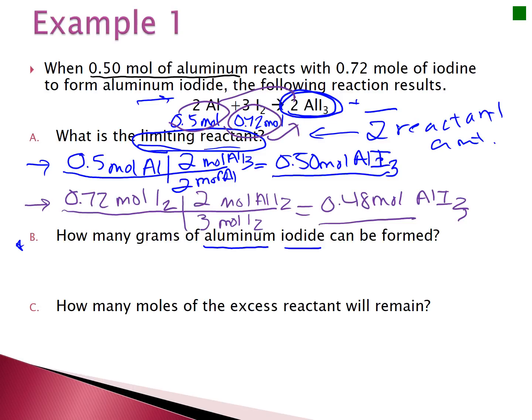There's not much of a difference here, but when doing this you always go with the smaller number — because you will run out of that reactant before you can make any more. Back to the ham sandwich: I can only make three sandwiches because I ran out of ham first. So the limiting reactant is whichever produces the smallest amount of product, which here is the iodine at 0.48 moles.